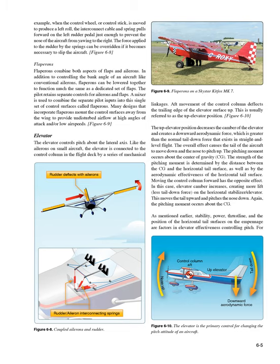Flaperons combine both aspects of flaps and ailerons. In addition to controlling bank angle like conventional ailerons, flaperons can be lowered together to function much like a dedicated set of flaps. The pilot retains separate controls for ailerons and flaps, and a mixer combines the separate inputs into this single set of control surfaces. Many designs mount flaperons away from the wing to provide undisturbed airflow at high angles of attack and/or low airspeeds.